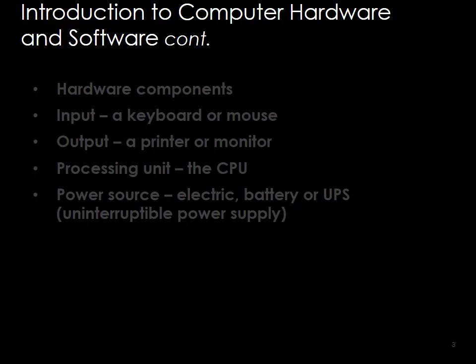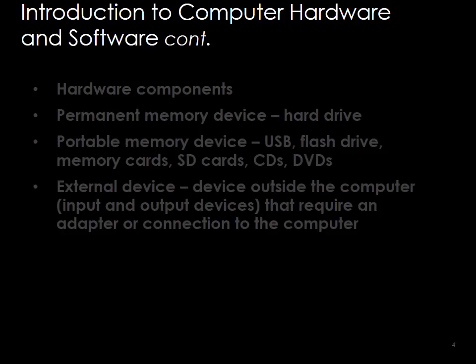The power source — the electric battery or an uninterruptible power supply — are all parts of the hardware. Permanent memory devices include a hard drive; portable memory devices include USB flash drives, memory cards, SD cards, CDs, and DVDs. External devices outside the computer, input/output devices that require an adapter to connect to the computer like a scanner, would also be hardware.